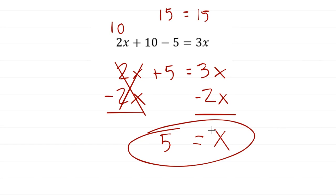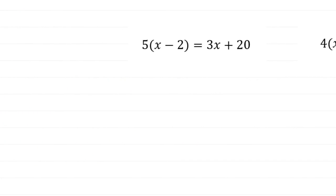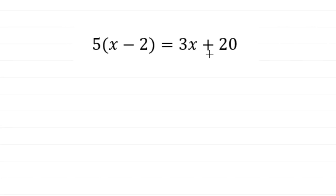That particular problem had the 10 minus 5 to simplify — you will see ones like that where you have to combine like terms, often constants. But the main idea is: what do we do when variables are on both sides? Remember, variables are just regular numbers we don't know yet, but we can treat them the same — add, subtract, multiply, or divide. Let's try another one more realistic to what you'd see in class. Look at the right side — it's tempting to say this would be 23x, but that's a variable and a constant; those are not like terms.